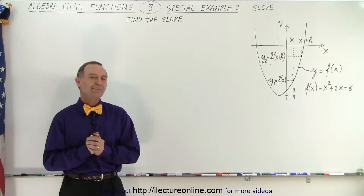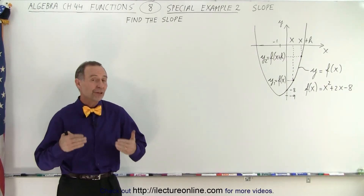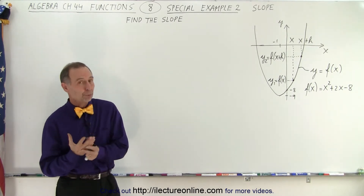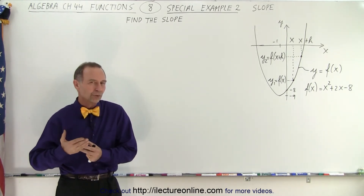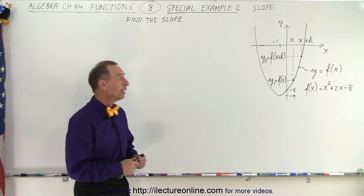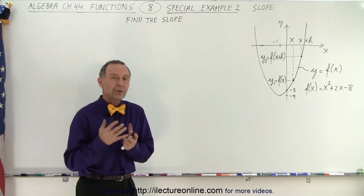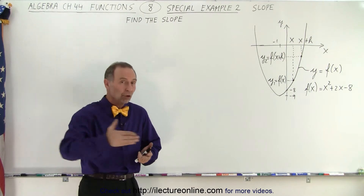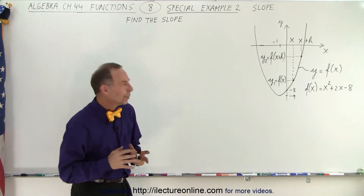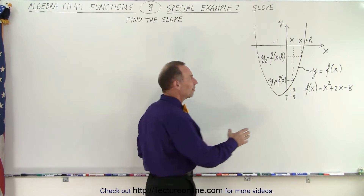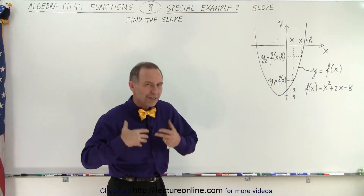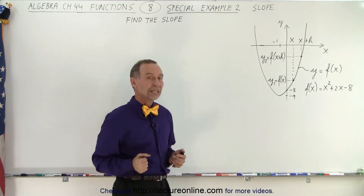Welcome to our lecture online. In the previous video we found the slope of a quadratic function — a simple quadratic function where y equals x squared, or f of x equals x squared. And essentially what we came up with was the slope at any point along that curve. Now we're going to do it again, but this time the function is x squared plus 2x minus 8, to gain more familiarity with how to use that notation.